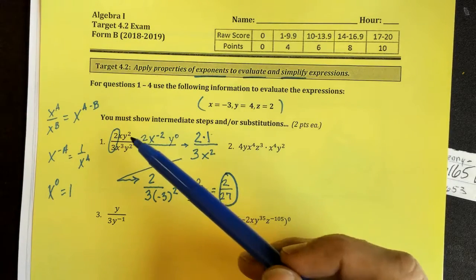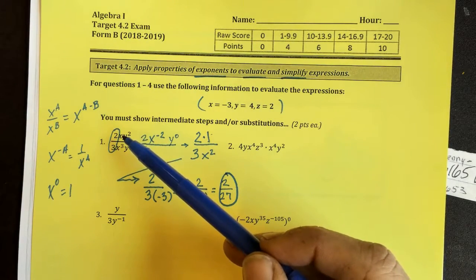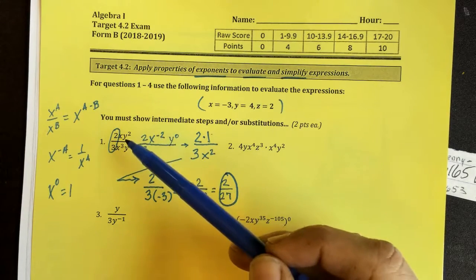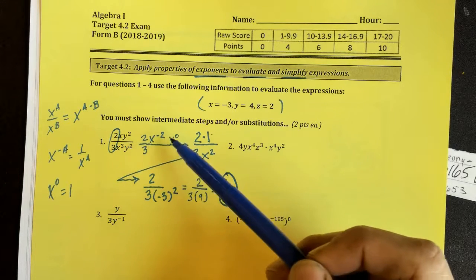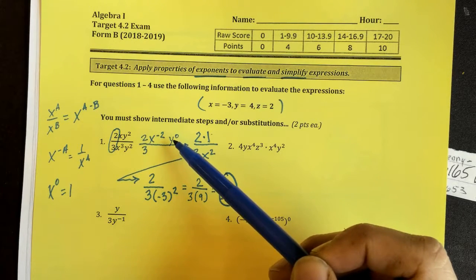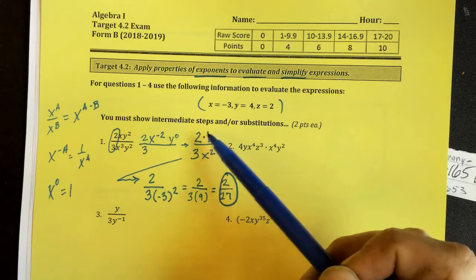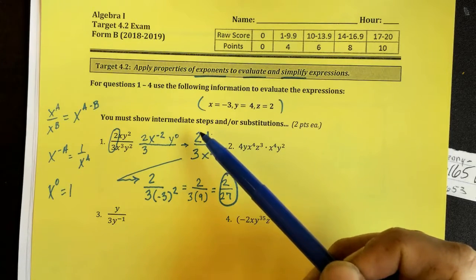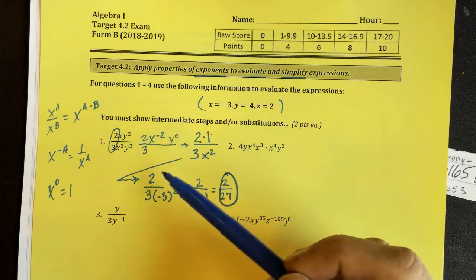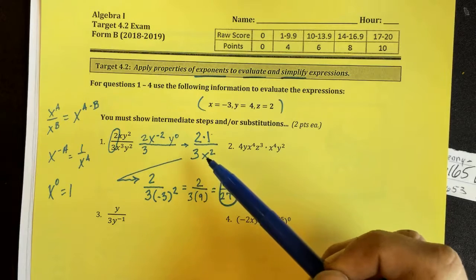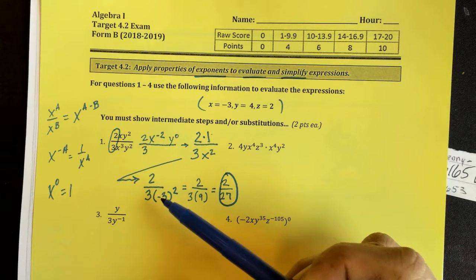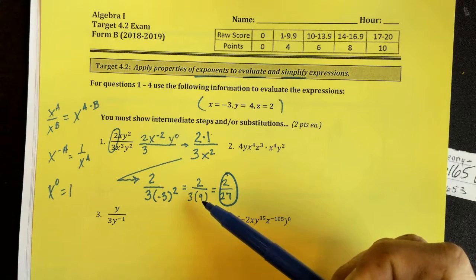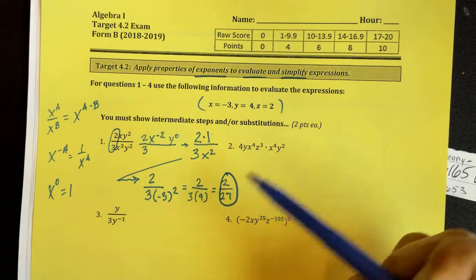I would recommend you pause the video at this point and try this again on your own. Let's go over the steps though. I simplified all the exponents. That's x to the 1 minus 3. 1 minus 3 is negative 2. That's 2 minus 2, which is 0. In the next step, y to the 0 became a 1. And x to the negative 2 got written in the denominator. So we have the fraction 2 thirds x squared. x I replaced with negative 3 in this step. I squared it. Negative 3 times negative 3 is 9. 9 times 3 is 27. There's my final answer.